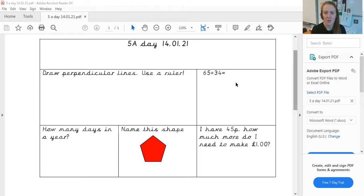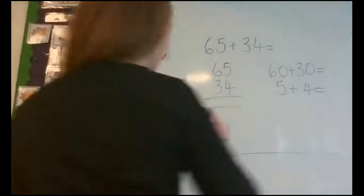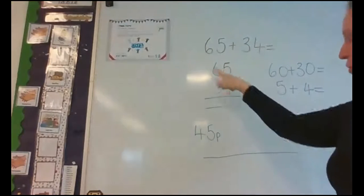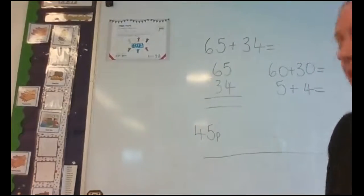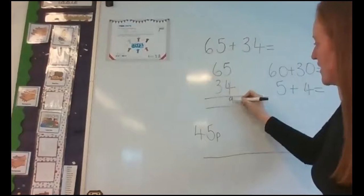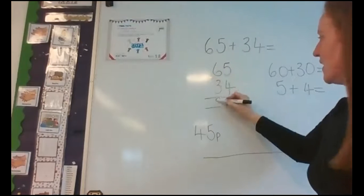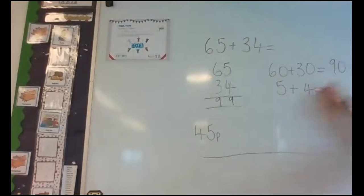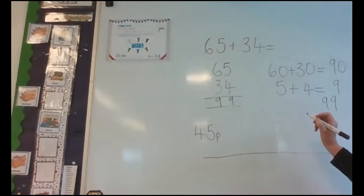I'm going to stop the share now and we're going to have a look at this addition sum together. And I'm going to stand up onto the board to show you how I worked it out. So the addition sum, 65 add 34 equals. So you could do it in your column addition method. How I've done here.